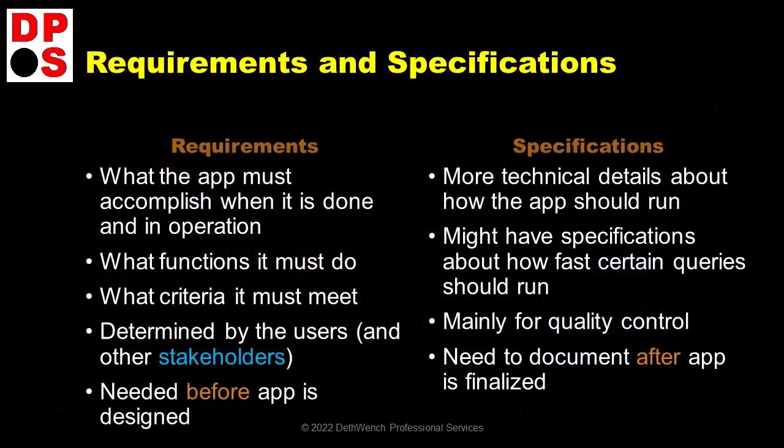So how does the PM know what tasks to put on the Gantt? Well, first the PM helps the team nail down the application requirements — or what the app is required to be able to do when it is complete and in use. What operations must it accomplish? What functions must it include? Everyone impacted by the app is called the stakeholder. This includes the sponsor, the PM, everyone on the application development team, all the users, and even people who are impacted by the app in a secondary way, such as government regulators of apps. So the PM figures out which stakeholders need to be consulted and how, and helps get them together to write requirements — and that is what is done at the very beginning, often before the full application development team is assembled.